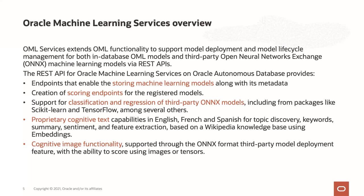We also offer proprietary cognitive text capabilities in English, French, and Spanish for topic discovery, keywords, summary, sentiment, and feature extraction based on a Wikipedia knowledge base using embeddings. In addition, we support cognitive image functionality — specifically image classification. If you have a model that does image classification, you can convert it to ONNX, register it, and get back classifications for new images you want to score.